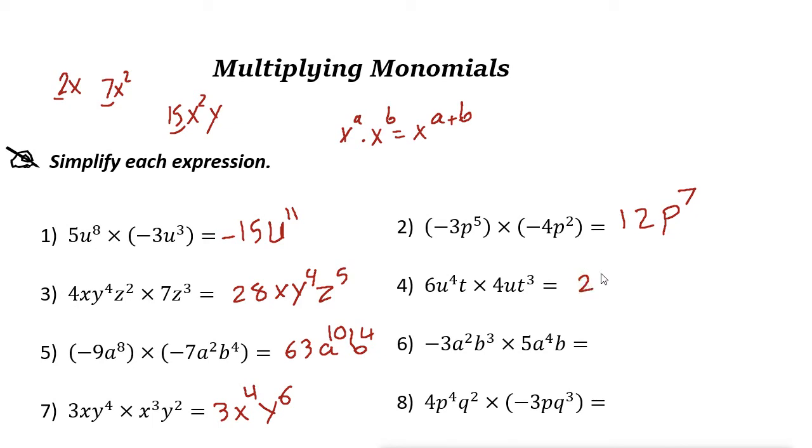6 times 4 is 24. U to the power of 4 times u to the power of 1 is u to the power of 5. And then t to the power of 1 and 3 is 4. So that one is u to the power of 5 and t to the power of 4.